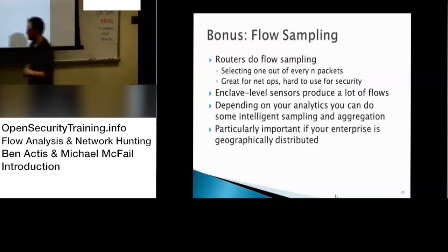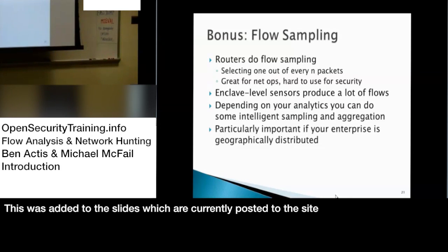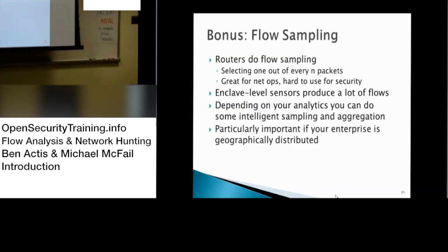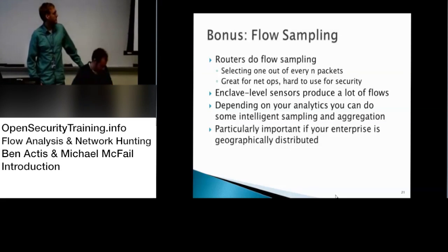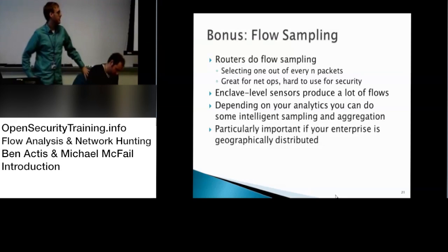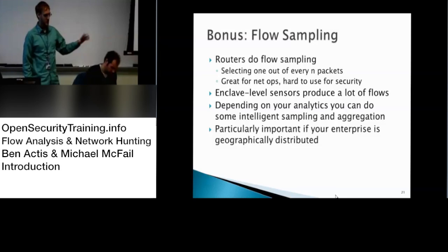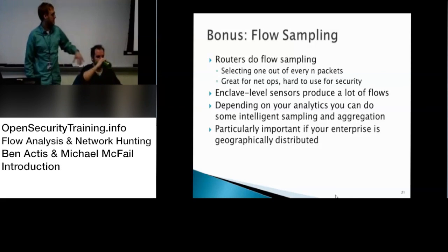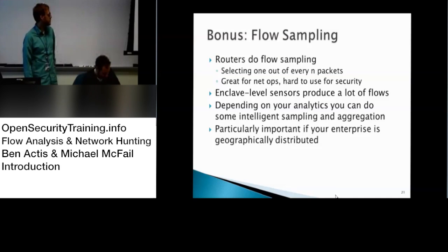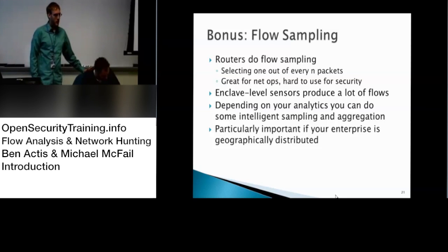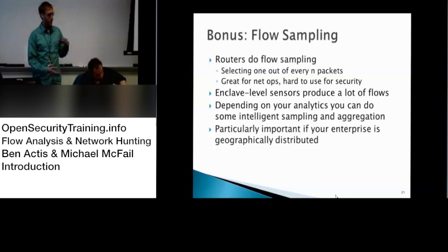Mike, do you want to talk about flow sampling? So routers do flow sampling often — out of every 10 packets, they pick one and convert it to NetFlow. It's fine for NetOps if you're worried about performance and understanding what's running on your network, but it doesn't really help for security when you're missing a lot of data. Censoring at the switch level or even using HostFlow produces a lot of network traffic, and even the resulting NetFlow is still quite a bit. Depending on the analytics you want to do, you might be able to condense that by aggregating or sampling.